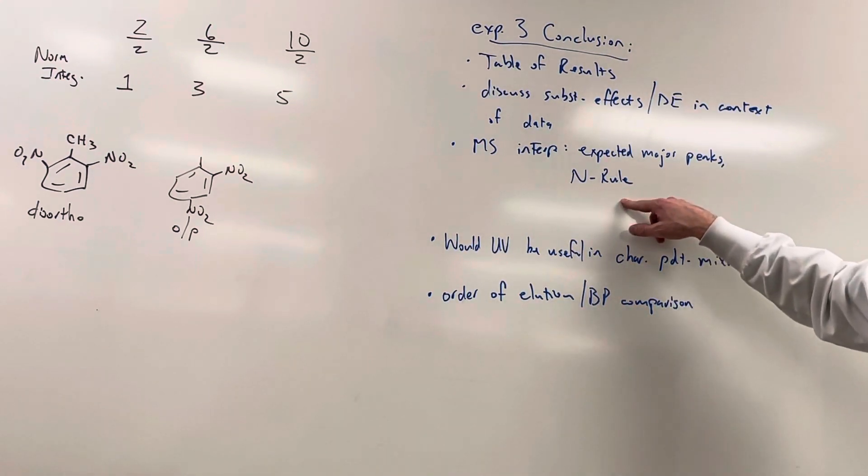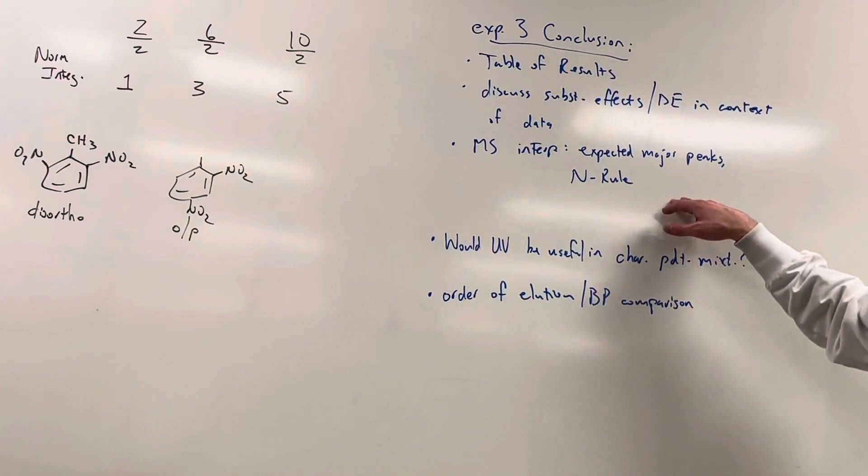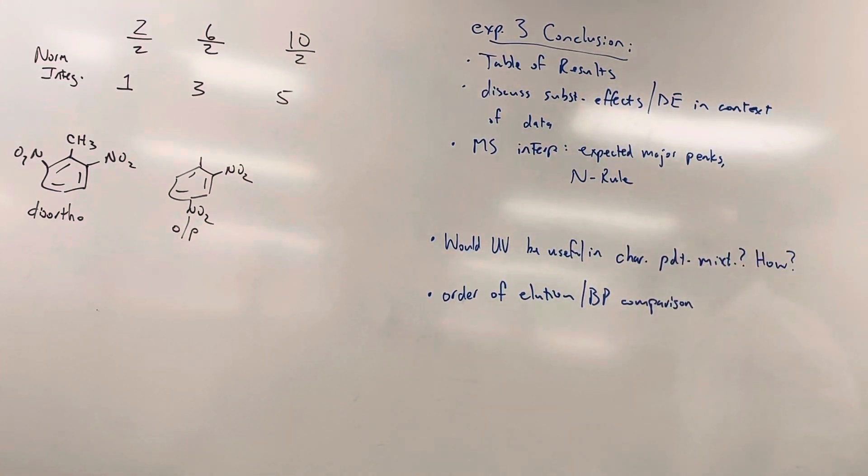All right. We also talked about the nitrogen rule. Putting nitro groups on the benzene is obviously putting a nitrogen group in. So do your spectra fall in line or fit the nitrogen rule? All right. I would also like for you to think about would UV spectroscopy be useful in characterizing your products? You know, and if so, how? In the past, if you had a chance to read the experiment three, the kind of the traditional way of doing this experiment, the nitration of acetanilide, but before we got the mass spec, we would just have you do the reaction of the nitration of acetanilide and then characterize using IR and UV spectroscopy. So would UV spectroscopy be useful? And if so, what would you look for? How would it be useful? So think about that.